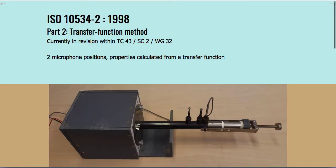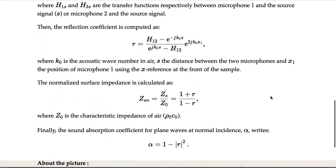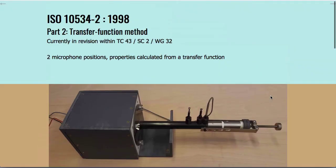The second part of ISO 10534 is what is called the transfer function method. In this case we do not move the microphone inside the tube but instead choose two fixed positions. We use one microphone at a fixed position and either move it to another position or use two microphones simultaneously, computing the frequency response functions to obtain the normal surface impedance, normal reflection coefficient, and normal sound absorption coefficient.